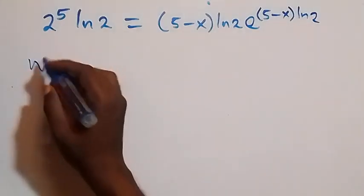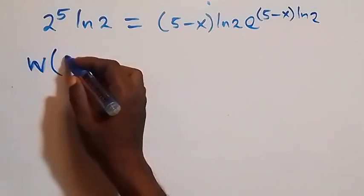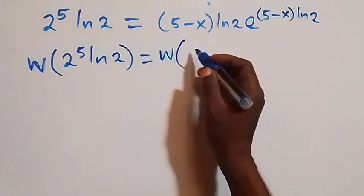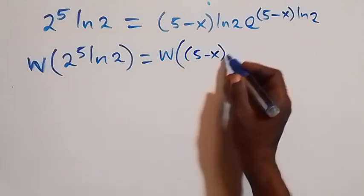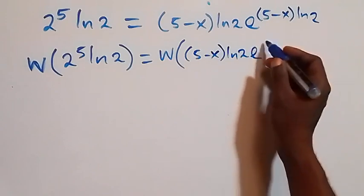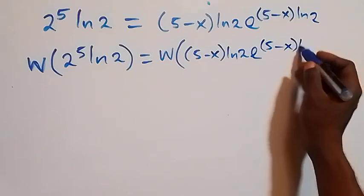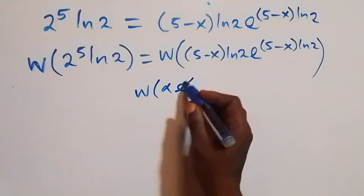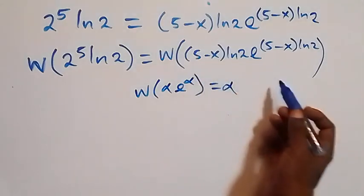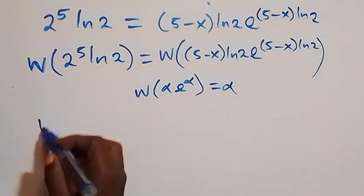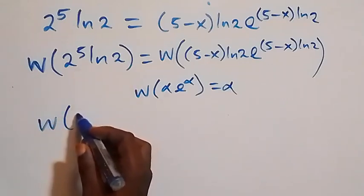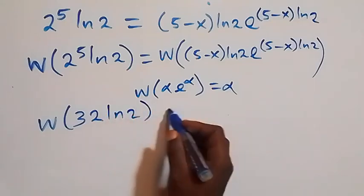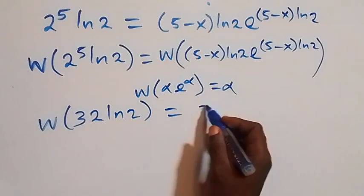The right side becomes 5 minus x times ln 2 times e raised to power 5 minus x times ln 2. We can now take the W function on both sides: W of 2 raised to power 5 times ln 2 equals W of 5 minus x times ln 2 times e raised to power 5 minus x times ln 2. Comparing with W of alpha times e raised to power alpha equals alpha, the right side reduces to 5 minus x times ln 2. We can write 2 raised to power 5 as 32, so W of 32 times ln 2 equals 5 minus x times ln 2.